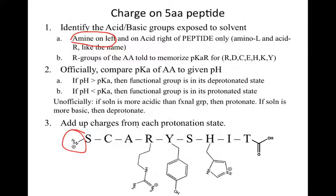You then identify your R groups based on the ones you memorized. I've listed the one-letter codes here — it's a little easier to deal with that in this case. Just identify those amino acids and move on to the next part.